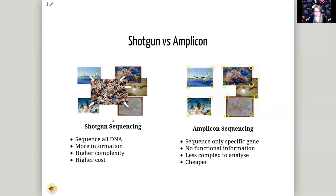The other main approach is amplicon sequencing — a more targeted approach. Instead of sequencing all the genetic material, we specifically sequence only a specific gene. In the jigsaw analogy, we would look only at the corner pieces, which are easy to recognize because they're different from the other pieces. We have less information and can't reconstruct the entire picture of each puzzle, but it may tell us enough — for example, whether this is a nature puzzle or an artwork. We can say less about the microorganisms, but it is simpler to perform, cheaper, and less complex to analyze.